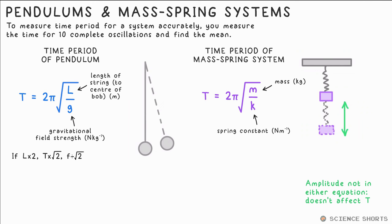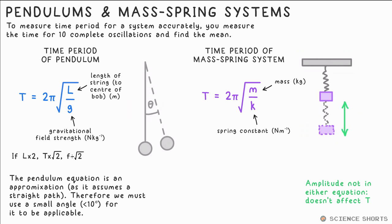The pendulum equation is a slight approximation though, as it assumes the motion is along a straight line, which is why if we measure the time for 10 oscillations in an experiment, and then divide by 10 to get an accurate time period, we must use a small angle, say less than 10 degrees.